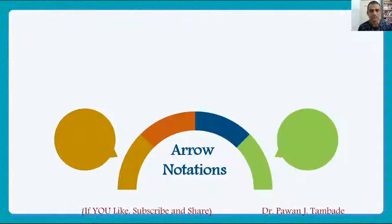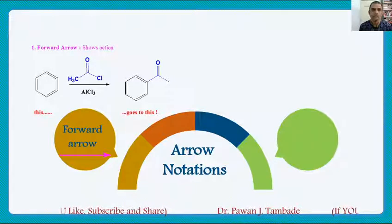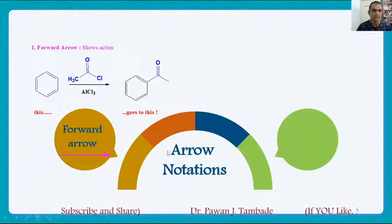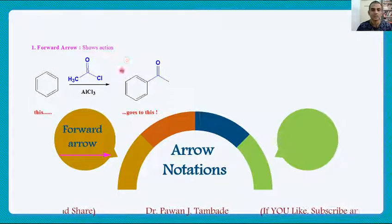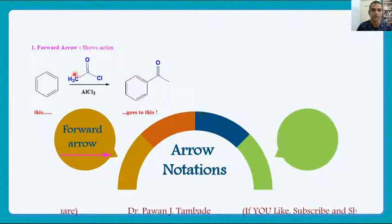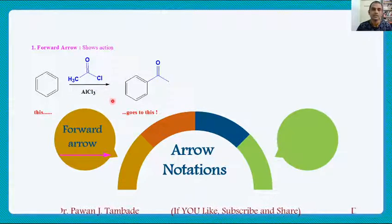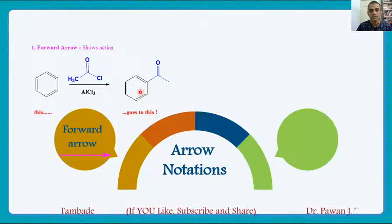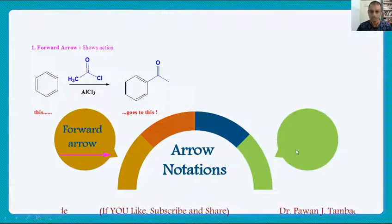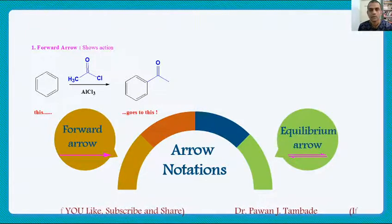The first arrow notation is the forward arrow. The forward arrow is used to show the reaction. For example, benzene is converted into acetophenone, and this is shown by the forward arrow. This forward arrow is also used to indicate the reagents and conditions being carried out to convert one material into another. This is very common in organic chemistry.